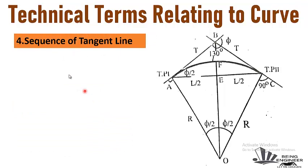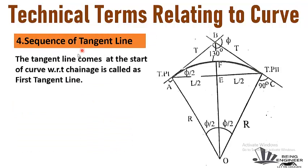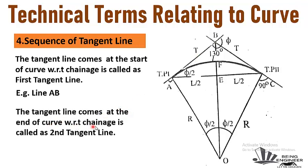The fourth term is the sequence of tangent lines. The tangent line that comes at the start of the curve with respect to the direction of change is called the first tangent line — for example, line AB. The tangent line that comes at the end of the curve is called the second tangent line — for example, line BC, represented as TP1 for the first tangent point and TP2 for the second tangent line.